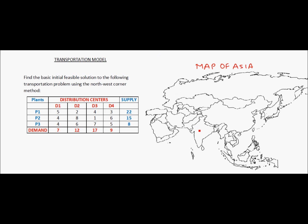The company has established its manufacturing plants in India and China and is targeting the European market to sell its products. The first plant P1 is in India, the second plant P2 is in China, the third plant P3 is also in China, and the distribution centers are located in various countries in Europe.